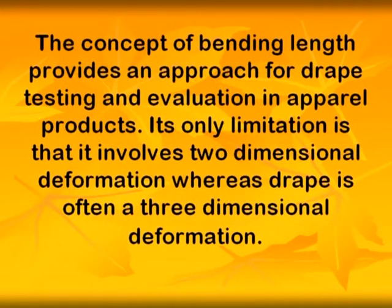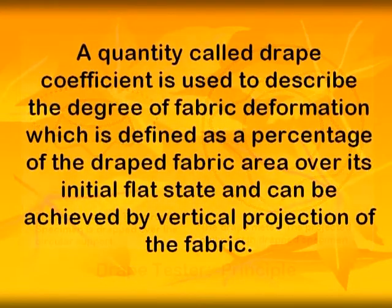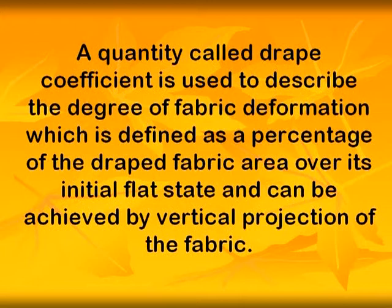The three-dimensional approach to evaluate fabric drape ability has found expression in the development of an instrument called the drape meter for objective measurement of drape of fabrics. A quantity called the drape coefficient is used to describe the degree of fabric deformation, which is defined as a percentage of the draped fabric area over its initial flat state.